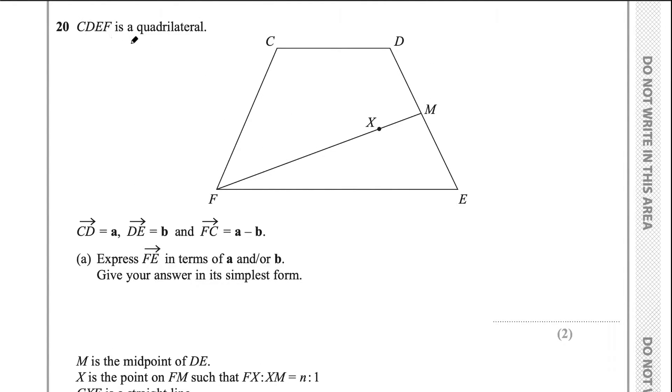This question says CDEF is a quadrilateral. CD equals the vector a, DE equals b, and FC equals a take b. And part A says express FE in terms of a and or b, give your answer in its simplest form.